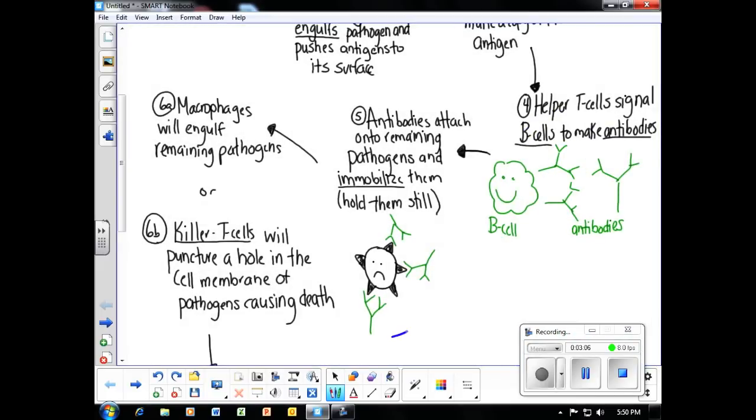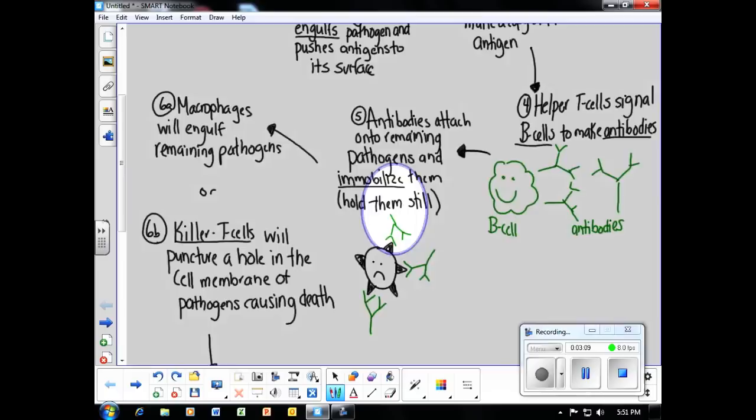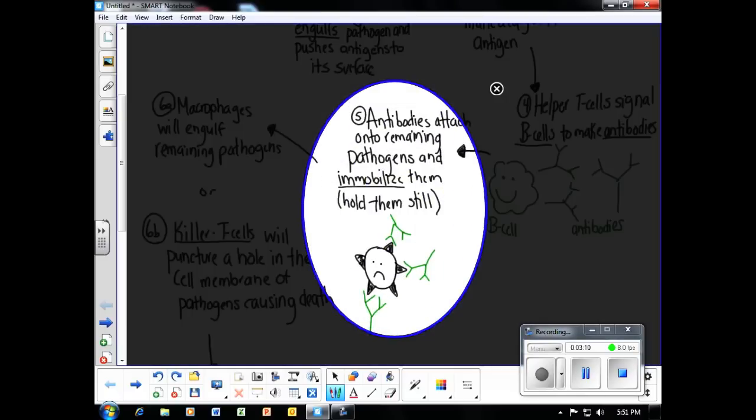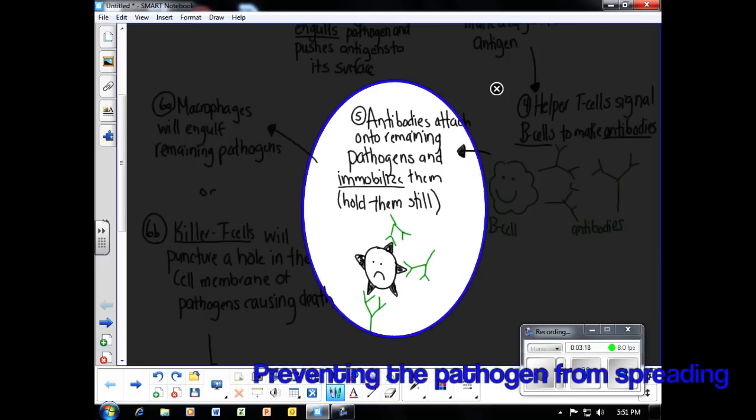The fifth step of our immune response is that the antibodies will then attach to remaining pathogens that are still running free in the body and immobilize them. This is like putting handcuffs on a criminal to hold them still.